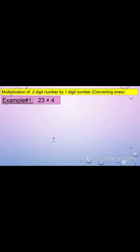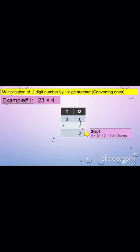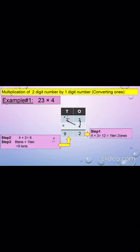Now we shall discuss the multiplication of a two-digit number by a one-digit number, and we will particularly discuss the conversion of ones. Here we have an example: 23 multiplied by 4. First, we put the values in the place value chart. 23 has two tens and three ones, and 4 comes in the ones column. In the first step, we will multiply 4 and 3. 4 multiplied by 3 equals to 12, and 12 equals to 1 ten and 2 ones. So 2 comes in the ones column and 1 goes carry in the tens column.